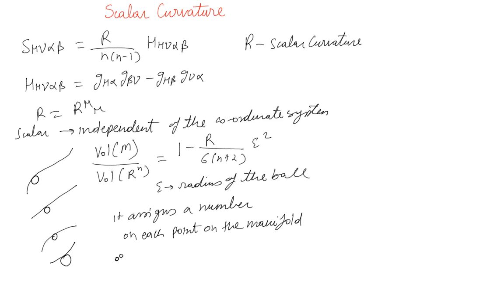So it assigns the same number throughout, and actually Ricci scalar is sort of oblivious of this fact that the number here is same as the number in its neighboring point. But Riemann tensor is aware of this fact. Because Ricci tensor is aware of this fact.